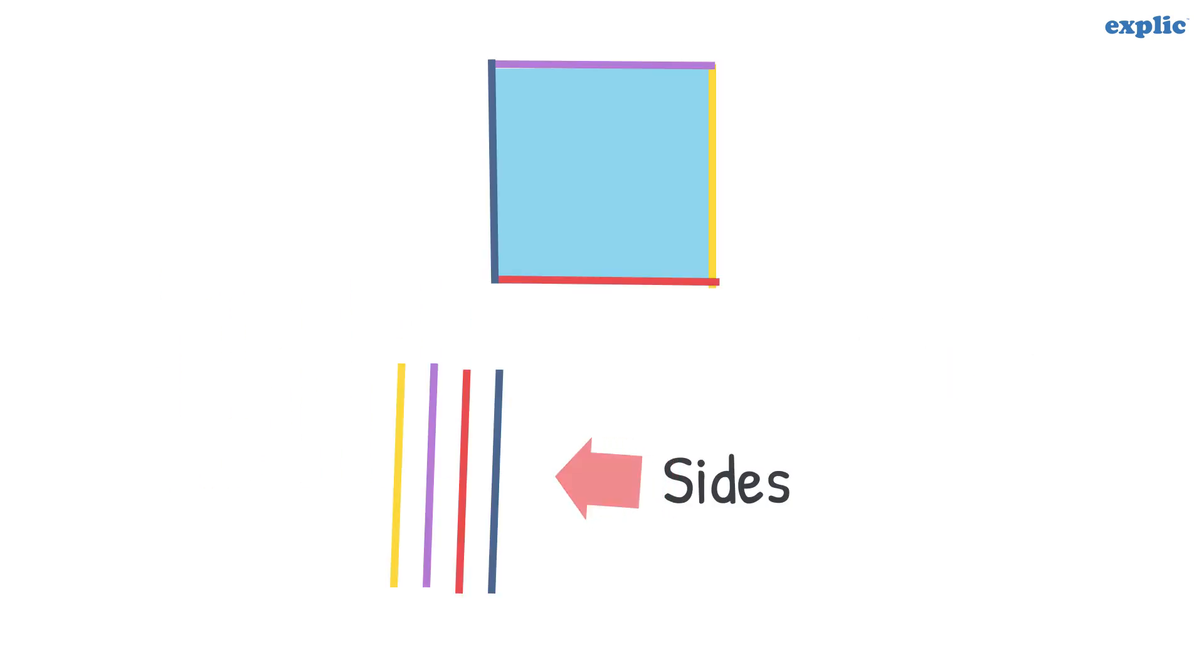The line segments which form a polygon are called sides. The meeting point of sides are called vertices.